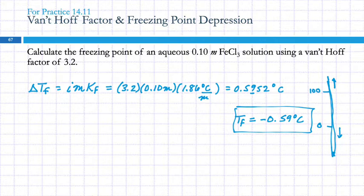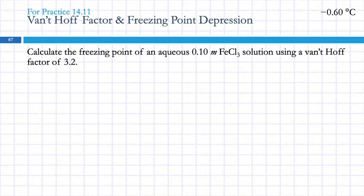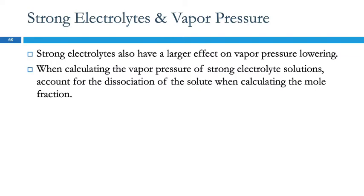Any questions? Vapor pressure is another colligative property, and strong electrolytes will also have a larger effect on vapor pressure lowering. But you can't just throw in a Van't Hoff factor. You have to factor in or account for the dissociation when you're calculating the mole fraction. I think there's a homework problem that makes you do that.